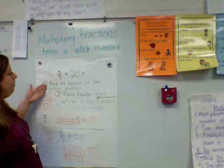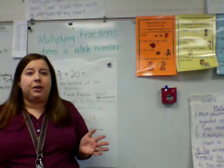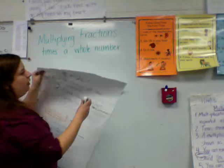So, when you're multiplying fractions times a whole number, the first step is to find the factors of the whole number. However, find a factor that relates to the denominator of the fraction, and then make an array. This unit, they have to be able to create a visual picture to get full credit on the test. So these rules are important to keep in mind. Let's go ahead and solve a problem using those steps.